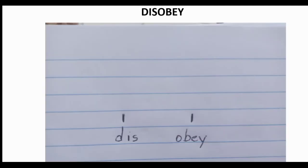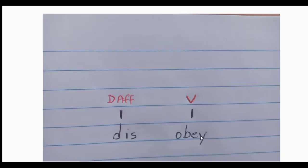For example, if I give you the word 'disobey', the first step is to break down the word into its morphemes. If I divide this word into its morphemes, I will have the morpheme 'dis', which is a prefix, and the root 'obey', which is a verb. The second step is to label each morpheme — 'dis' is a derivational affix and 'obey' is a verb.